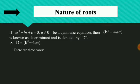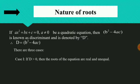Now the value of D can have 3 different values: it can be greater than 0, equal to 0, or less than 0. So depending upon that, there are 3 different cases. Case 1: if D is greater than 0, then whatever is there in the under root sign is positive. Therefore, the roots will exist and we say that the roots are real and unequal.